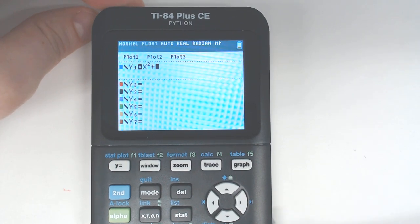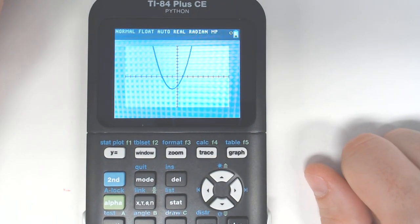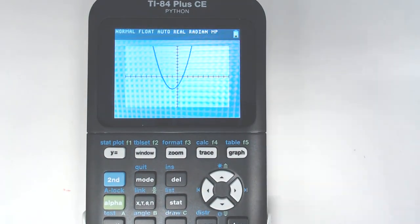And then plus like 2X, let's go with minus 3. And then when you hit graph, it graphs it. So you'd end up with anything you want from that.